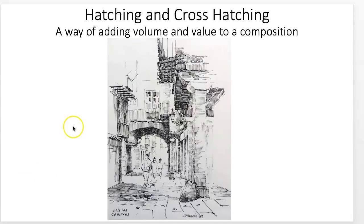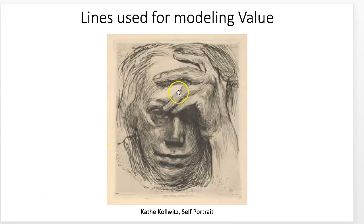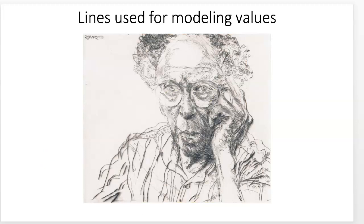Hatching goes in one direction; cross-hatching goes back and forth as the name implies. Even a really dark black area can still be done through line work — you can still see the white spaces between the lines. Käthe Kollwitz's self-portrait uses hatching lines in a rougher style, but it's still line modeling the values. Line quality can vary in roughness or carefulness, but it's still line creating the values.